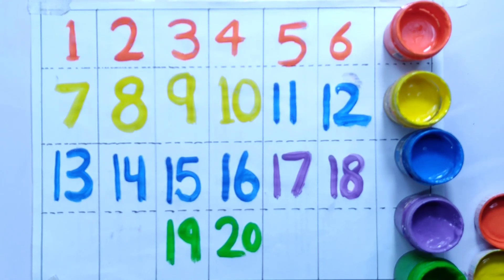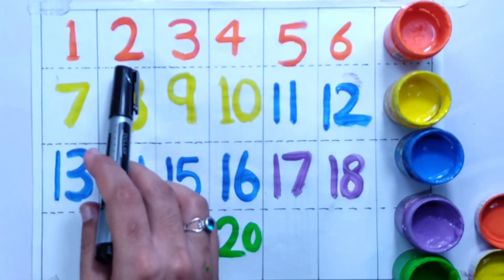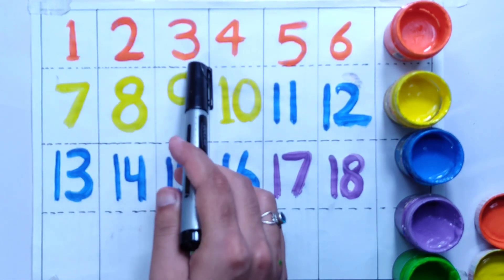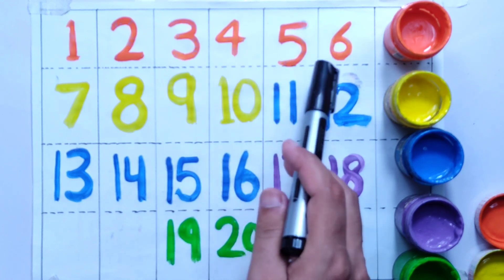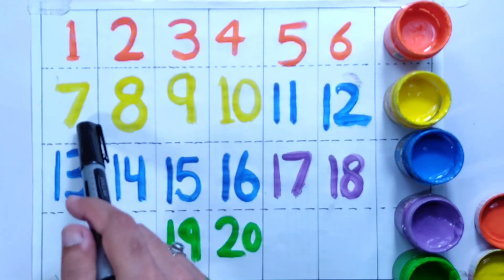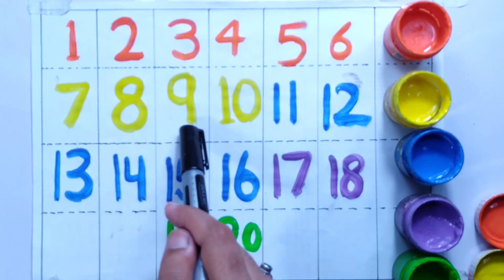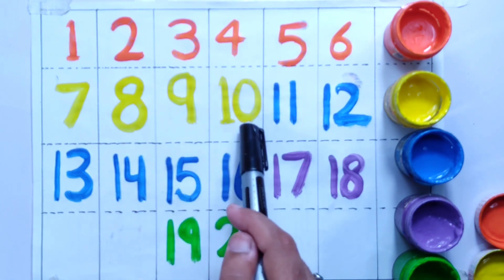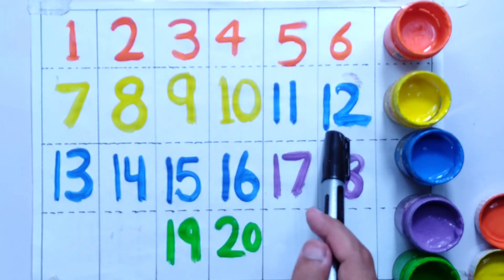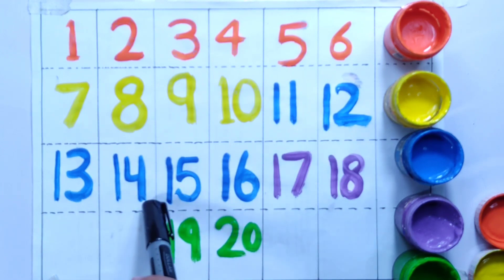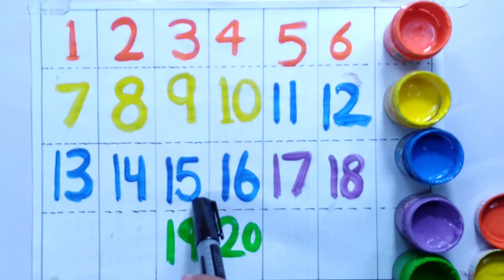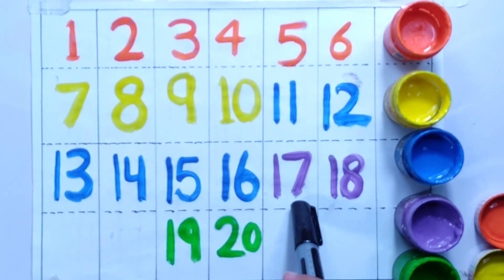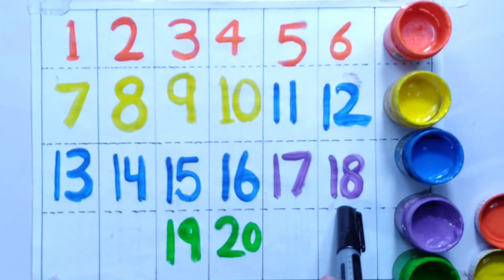Let's make a revision: 1, 2, 3, 4, 5, 6, 7, 8, 9, 10, 11, 12, 13, 14, 15, 16, 17, 18, 19, 20.